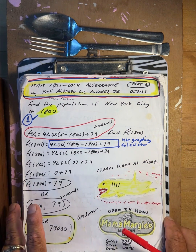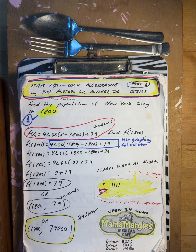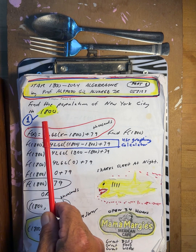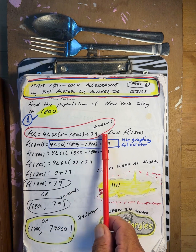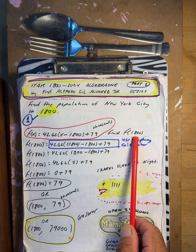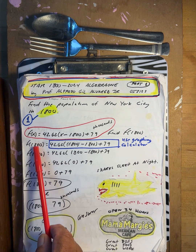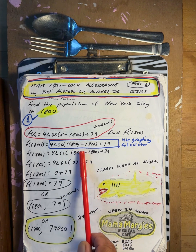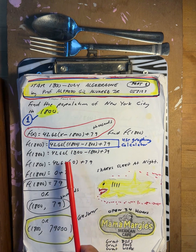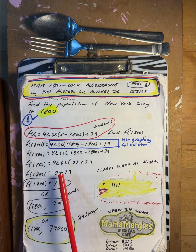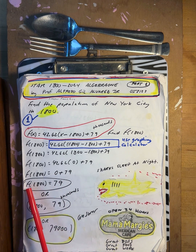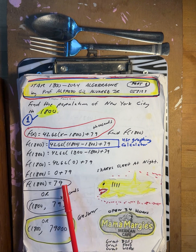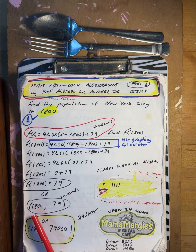Find the population in New York City in 1800. Here's a function — it's in thousands. So f of 1800 means you put in 1800 for x. 1800 minus 1800 is 0, 0 times that is 0, and 0 plus 79 is 79. So f of 1800 is 79.